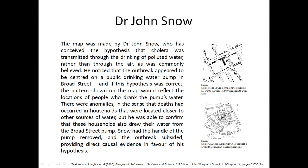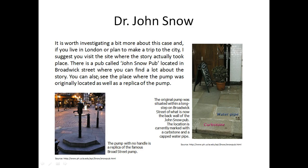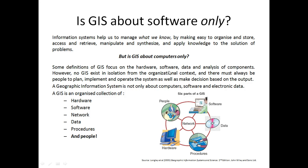This is the power of GIS — just by making a map, the source of an outbreak problem could be established. It is worth investigating this case further. If you go to London, you can visit these places — there is a replica of the famous Broad Street pump with no handle, and there is a pub also located there. At that time, nobody understood what cholera was, and there was no software, yet he solved that cholera problem through a geographic information approach. An information system helps us manage what we know — making it easy to organize, store, access, retrieve, manipulate, and synthesize knowledge to solve problems.